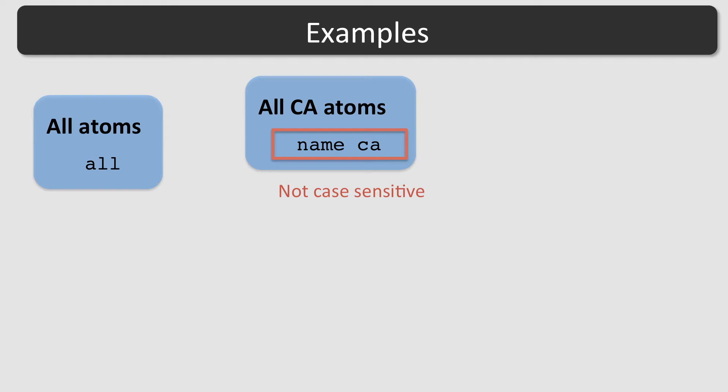Here are some examples illustrating the selection syntax. To select all atoms, use all. To select all C-alpha atoms, use name CA. CA stands for C-alpha. As you can see, the string for atom name is not case sensitive. To select chain B, use chain B.